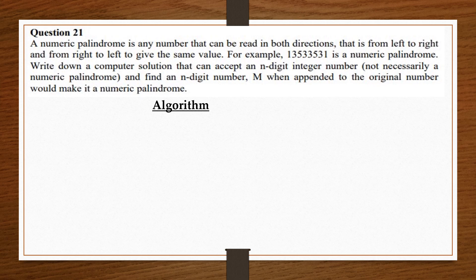A numeric palindrome is any number that can be read in both directions — that is, from left to right and from right to left — to give the same value. For example, 13533531 is a numeric palindrome. Write down a computer solution that can accept an n-digit integer number, not necessarily a numeric palindrome, and find an n-digit number m when appended to the original number will make it a numeric palindrome.